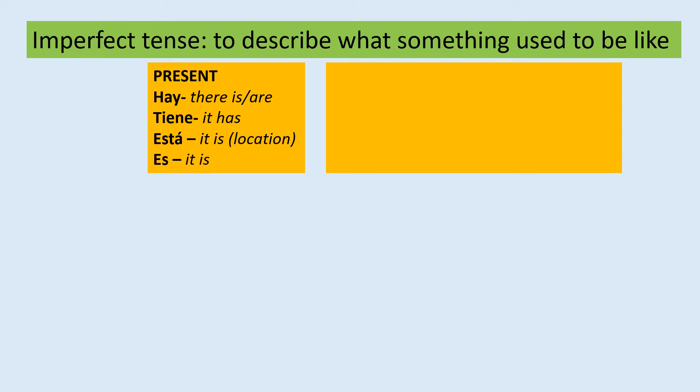And then es, which is mostly used to describe. For example, el hotel es bonito — the hotel is pretty. So how do we say these forms in the imperfect tense? Hay becomes había, which means 'there used to be', or 'there was', or 'there were'.